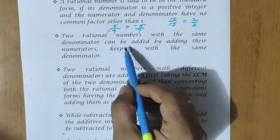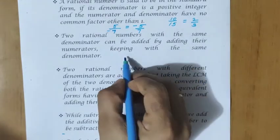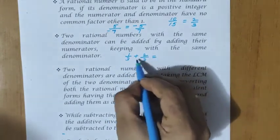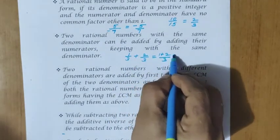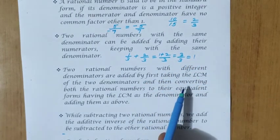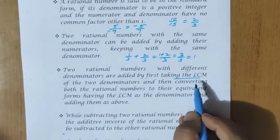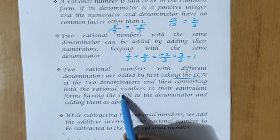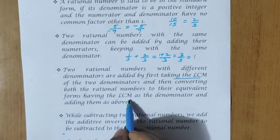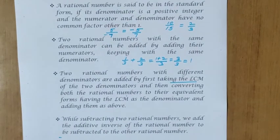Two rational numbers with the same denominator can be added by adding their numerators, keeping the same denominator. For example, 1 by 3 plus 2 by 3: the denominators are the same, so we add the numerators — 1 plus 2 equals 3 by 3, which equals 1. When the denominators are different, we take the LCM as the denominator, convert the rational numbers to their equivalent forms, and then add the numerators.